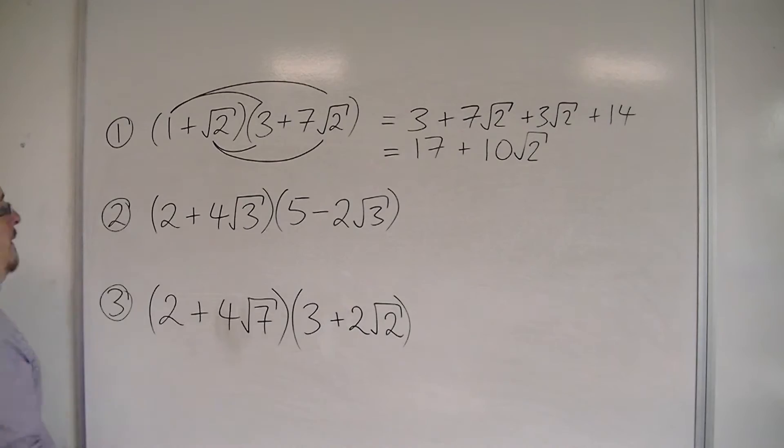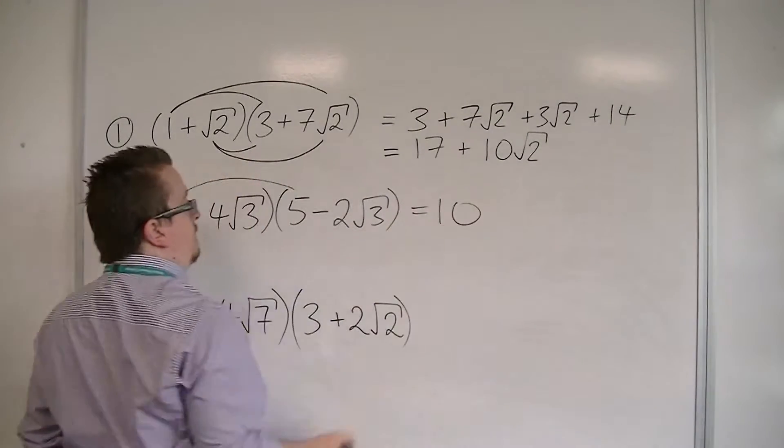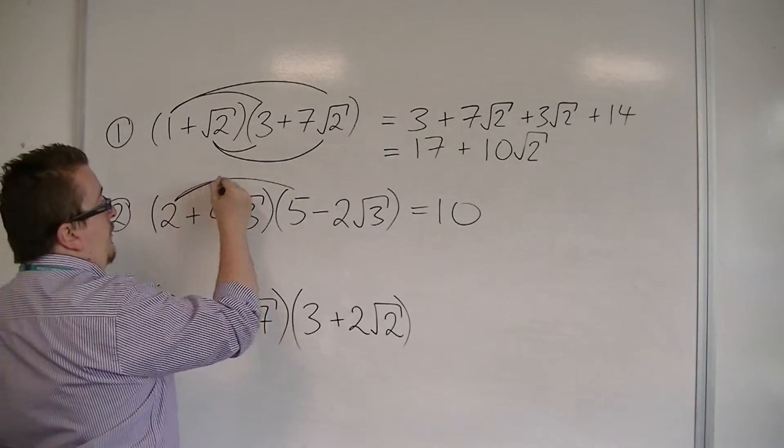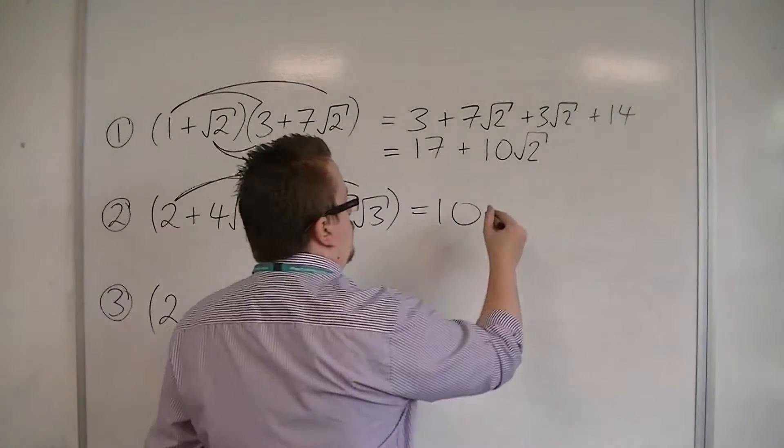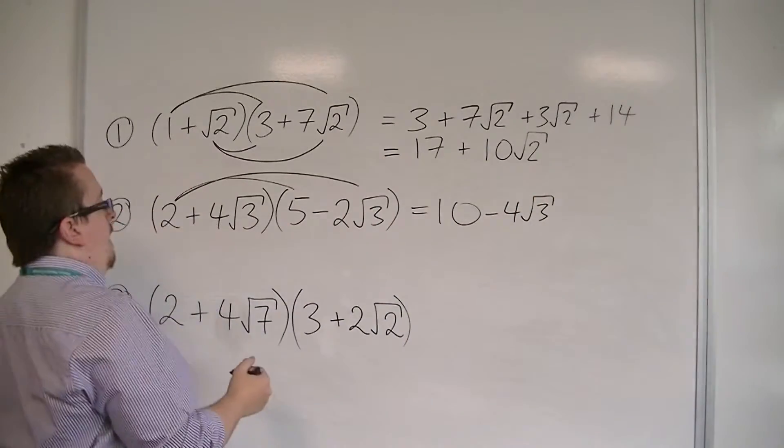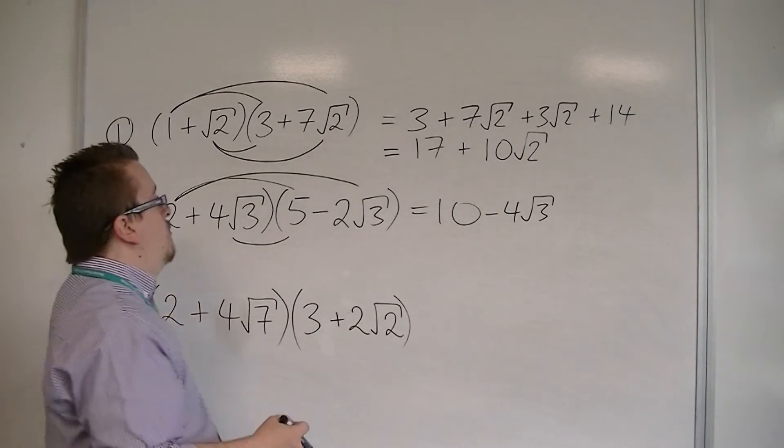So let's have a look at the second one. First, I've got 2 times 5, so that would be 10. Then I'm going to have 2 times -2√3, so -4√3. Then I've got 4√3 times 5, so that's 20√3.